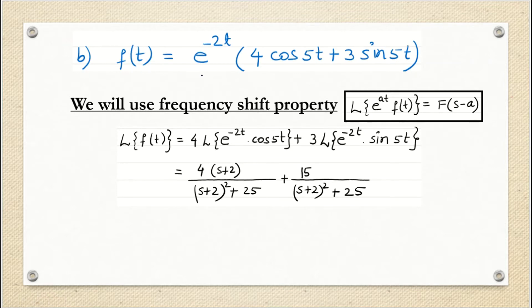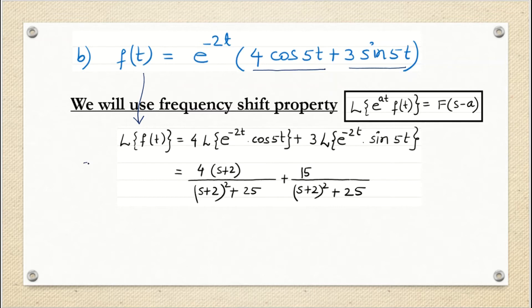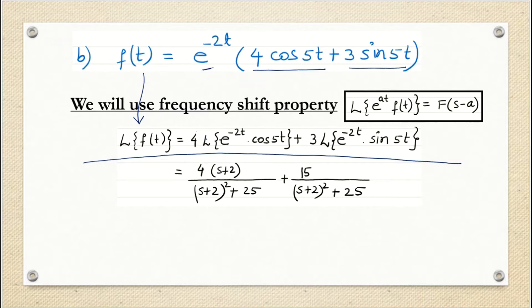The second question is f(t) = e^(−2t) multiplied by (4cos5t + 3sin5t). We write down the Laplace transform of this function and separate it into two terms: 4 times the Laplace transform of e^(−2t)·cos5t, plus 3 times the Laplace transform of e^(−2t)·sin5t. Then we apply the frequency shift property.